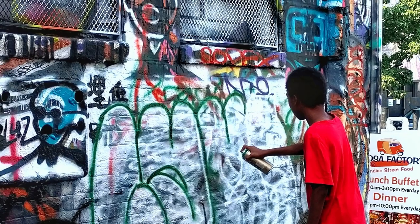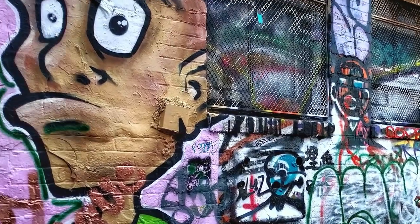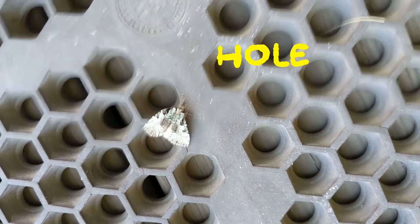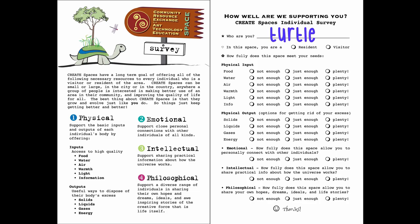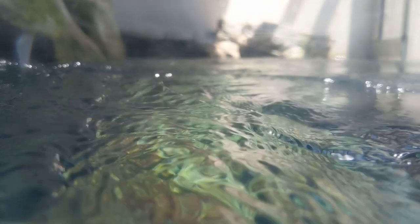Step two: invite artists who can help all of the animals, vegetables, minerals, and other individuals in your space effectively express their needs to flourish — specifically their input needs of things like high quality food, water, air, warmth, light, and information, and output needs of various interesting solids, liquids, gases, and energy — so that they can all be their best and work towards their greatest dreams, creating and exploring uniquely awesome things in the universe and in the community.